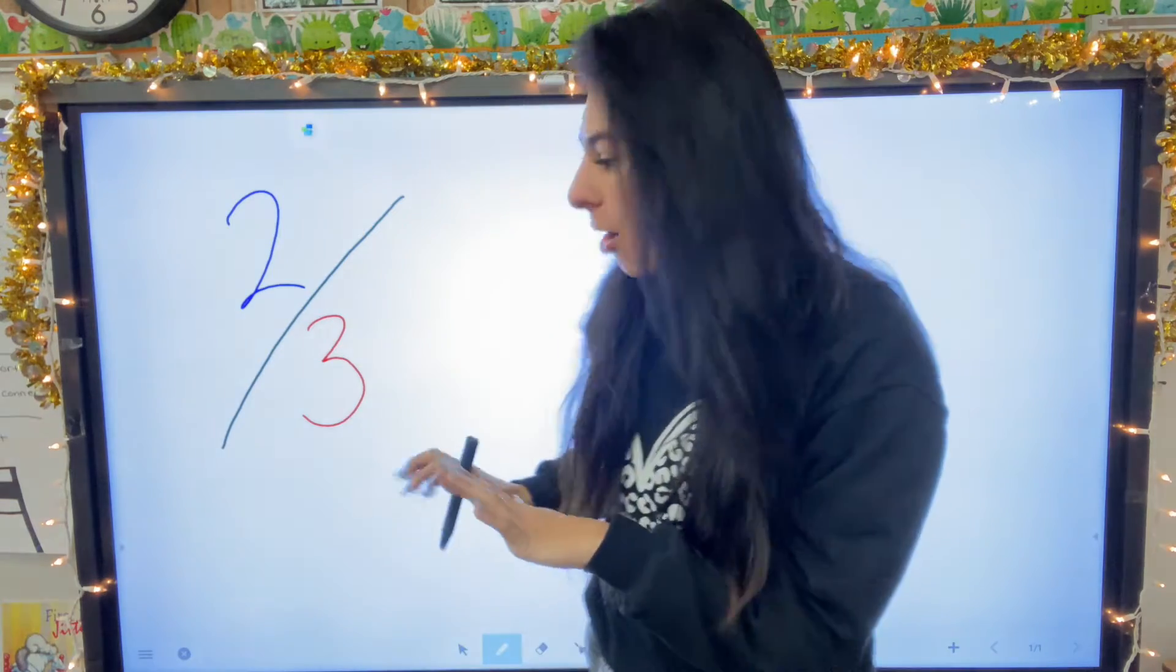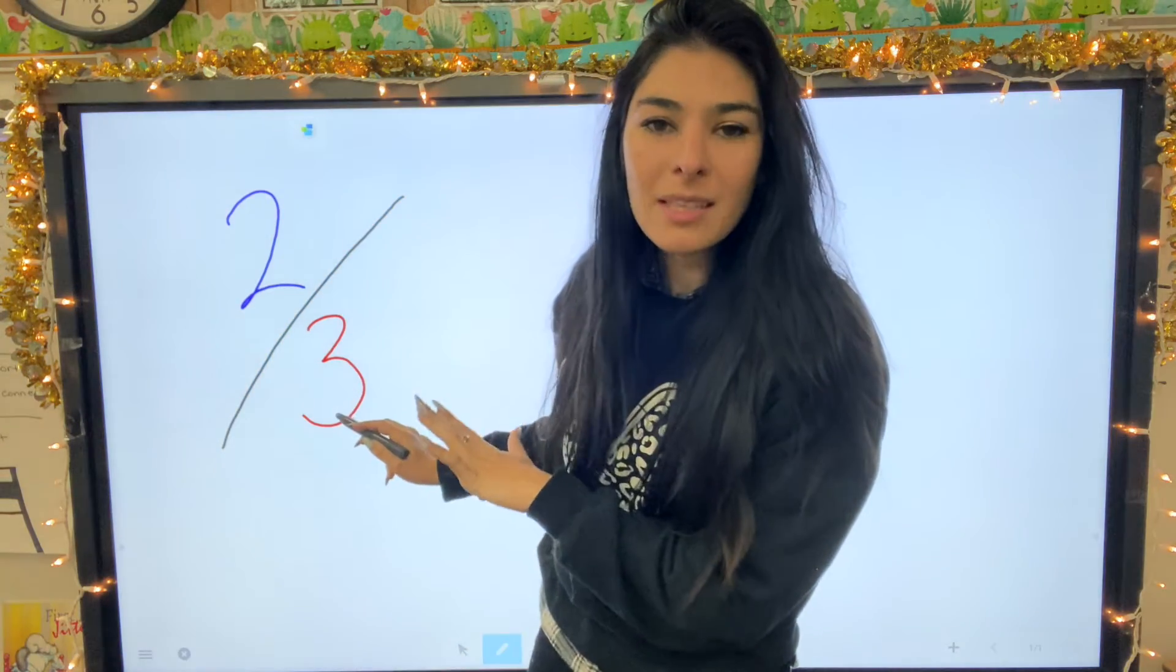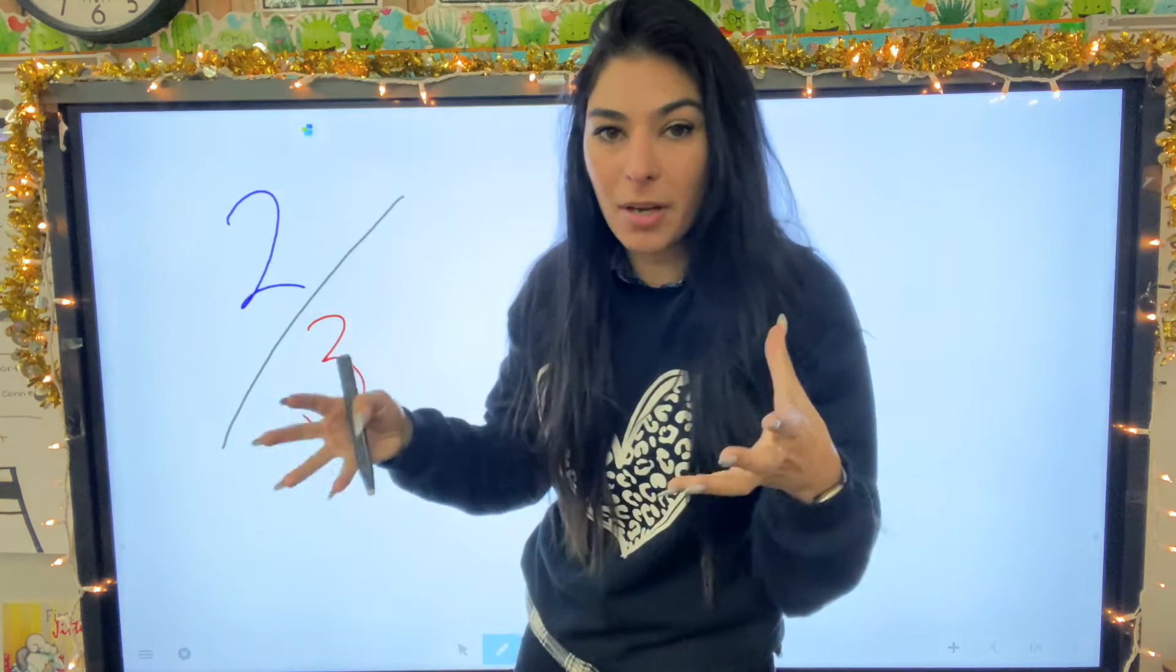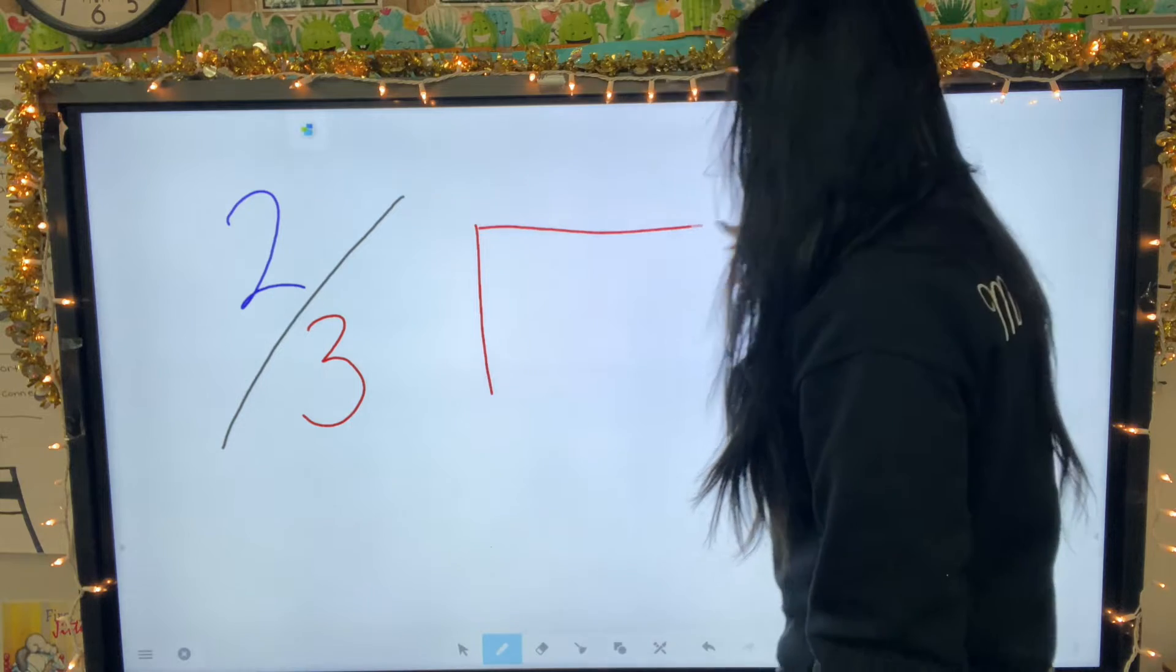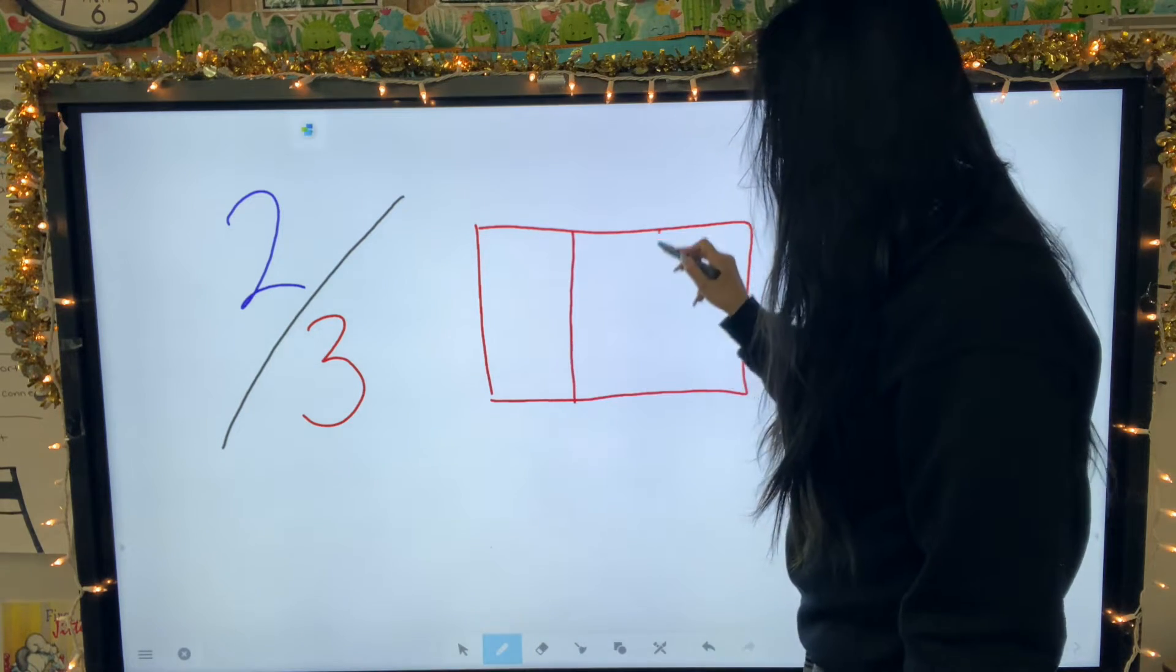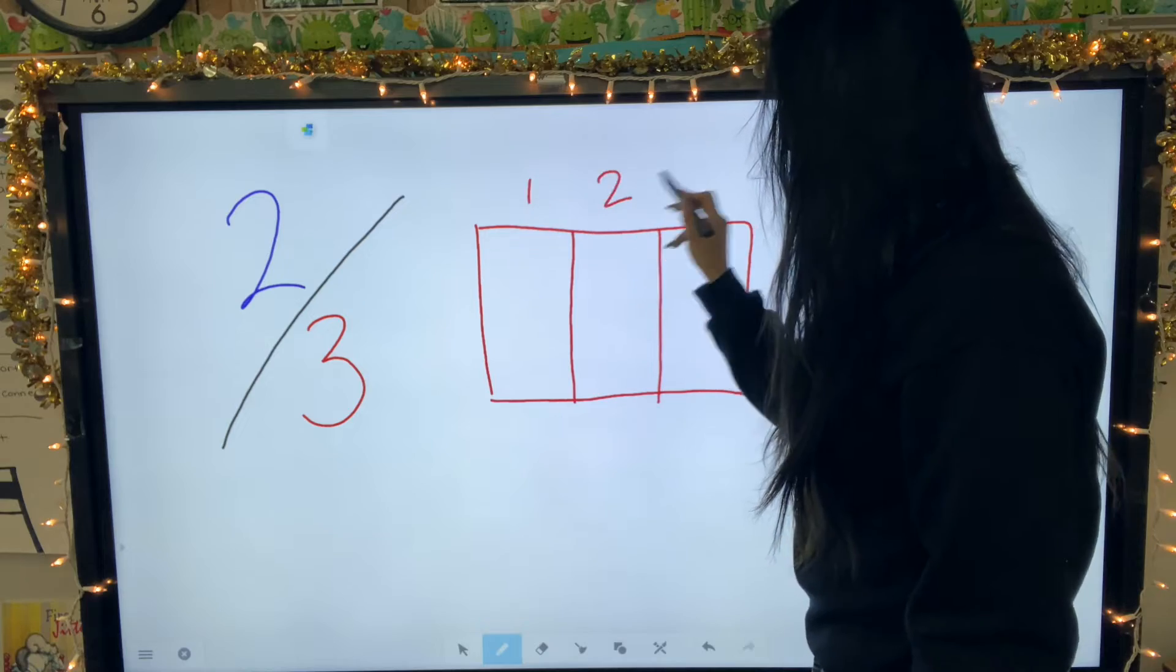The denominator is three. That means that there's three pieces in whatever object I'm talking about. So I'm going to go ahead and draw a rectangle. And that means that there are three pieces. So one, two, three.